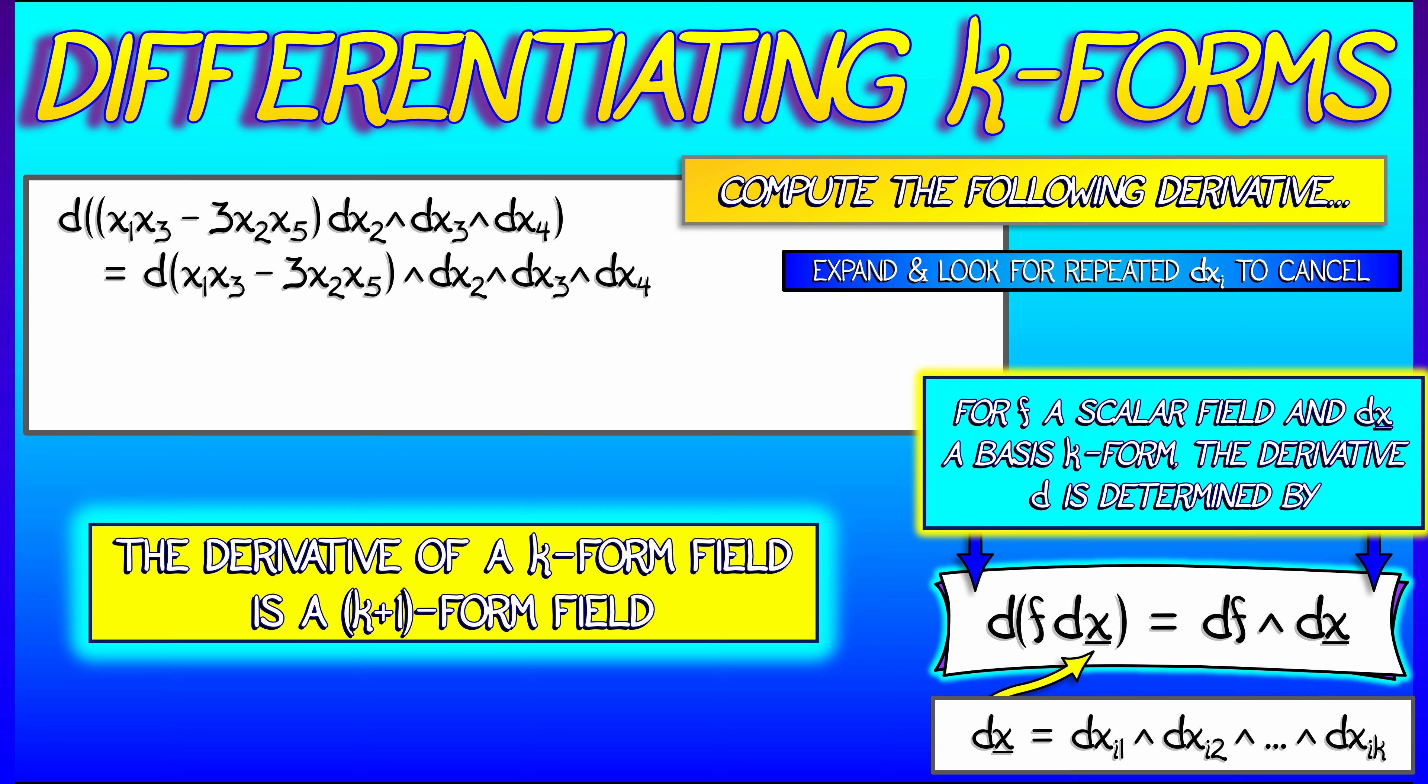Now we're just going to apply the standard gradient one-form rule that we know to that scalar field out in front, and what do we get? Well, from the product rule, we get x1 dx3 plus x3 dx1 minus 3x2 dx5 minus 3x5 dx2, wedge that with dx2 wedge dx3 wedge dx4.